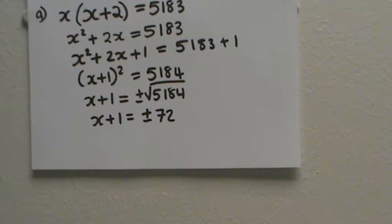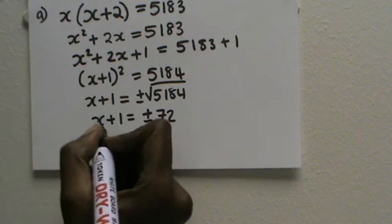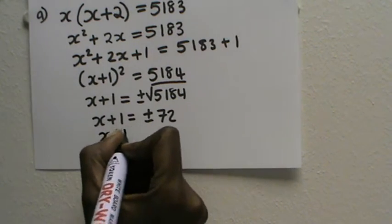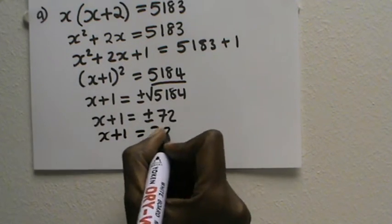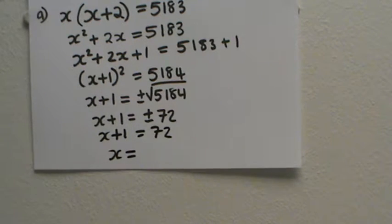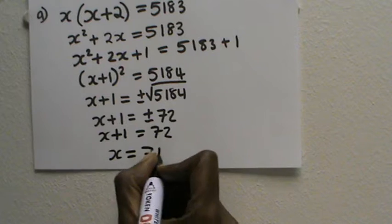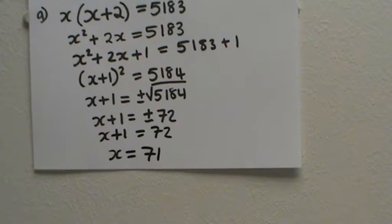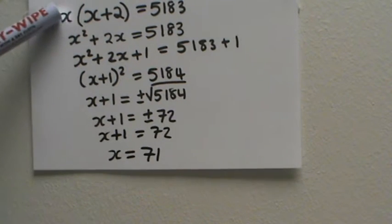So then we'll have x + 1 = 72, and this means that x is equal to 71. Okay, so remember we have to work out what the two odd numbers are. We say the first one